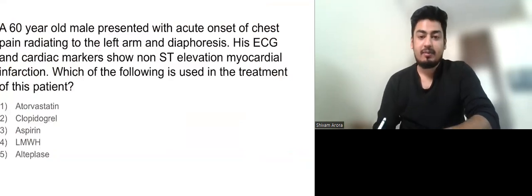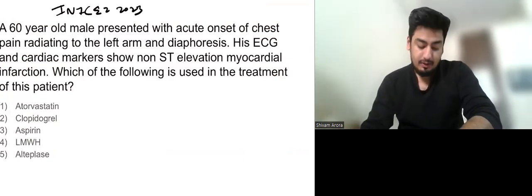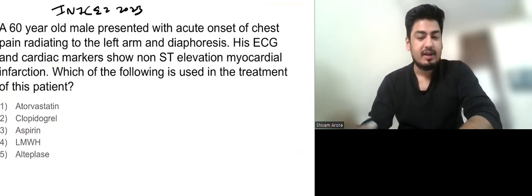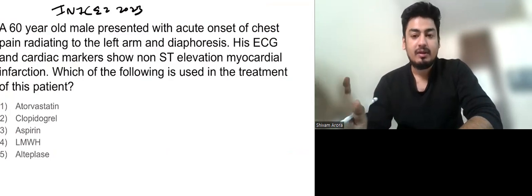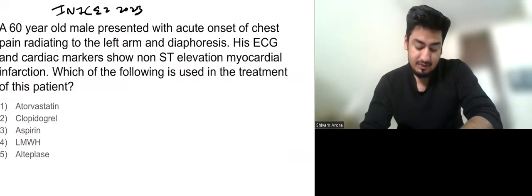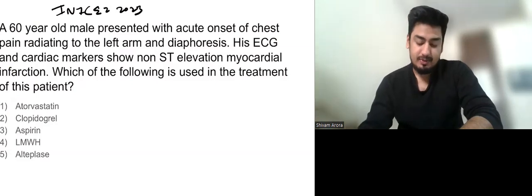Now let us come to this question. This question again came in INICET 2023. The question reads: a 60 year old male presented with acute onset of chest pain radiating to the left arm and diaphoresis. So all these are points which are in favor of cardiac pain. The pain of angina basically. Now his ECG and cardiac biomarkers show non-ST elevation MI. Which of the following is used in the treatment of this patient.